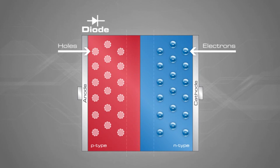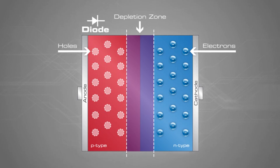The electrons diffuse into the vacant holes in the p-material, causing a depletion zone. This depletion zone acts like an insulator, preventing other free electrons in the n-type silicon from combining with the holes in the p-type silicon.